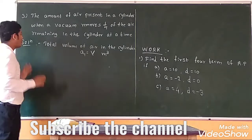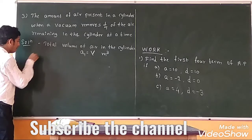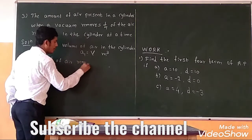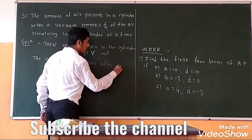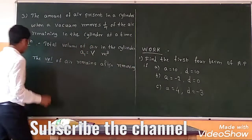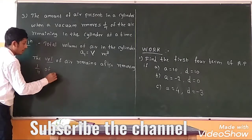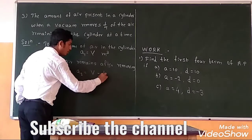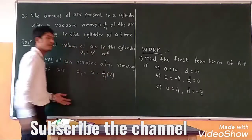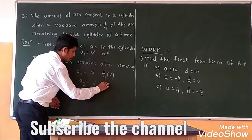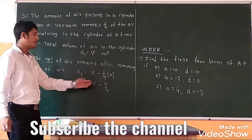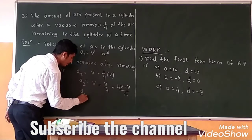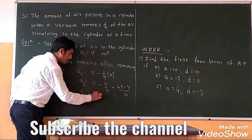The volume of air remaining after removing one part of air becomes A2. The total volume is V, and from this it removes one-fourth of the total volume. So A2 equals V minus V divided by 4. Taking LCM, it becomes 4V minus V divided by 4, which gives A2 equal to 3V divided by 4.